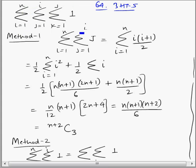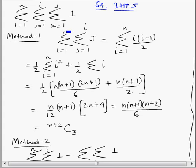There are two methods; we will discuss both methods to solve this question. In Method 1, we will apply sigma formulas. Sigma of 1 equals j, because k varies from 1 to j, so we add 1 a total of j times.